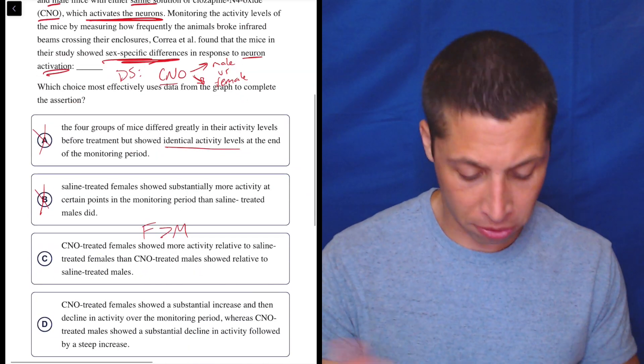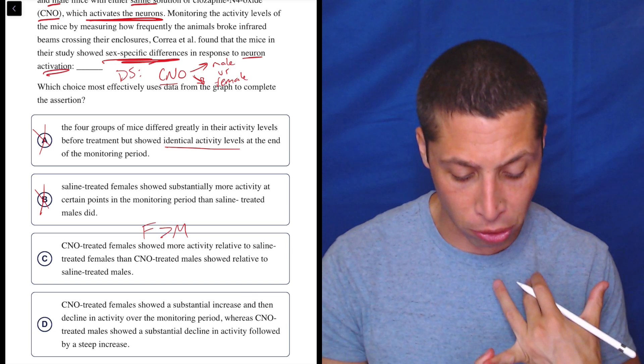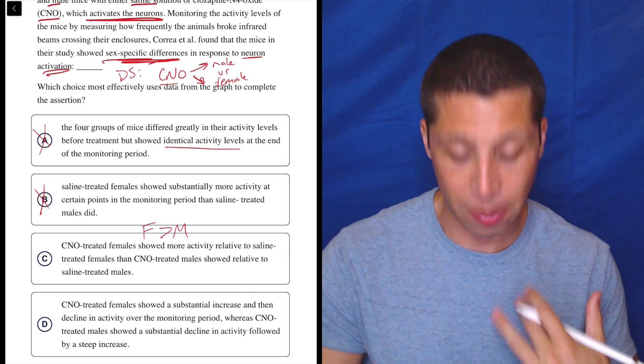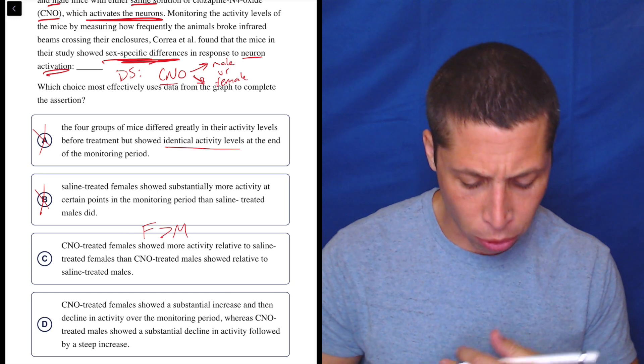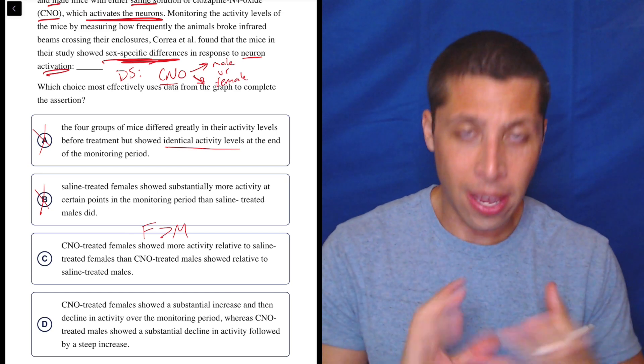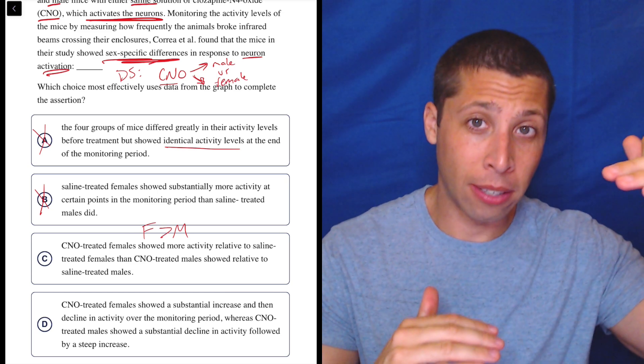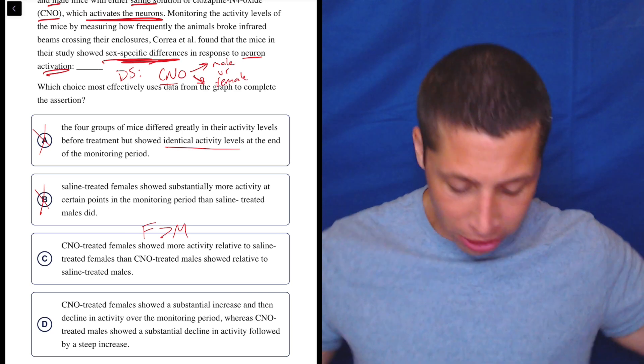And they're both of the CNO ones are higher than both of the saline ones. So I think that's checking everything off. So CNO treated females showed more activity relative to saline treated females. That's true. Then CNO treated males showed relative to saline treated males. The females are higher with the CNO thing. But let's just look at D.